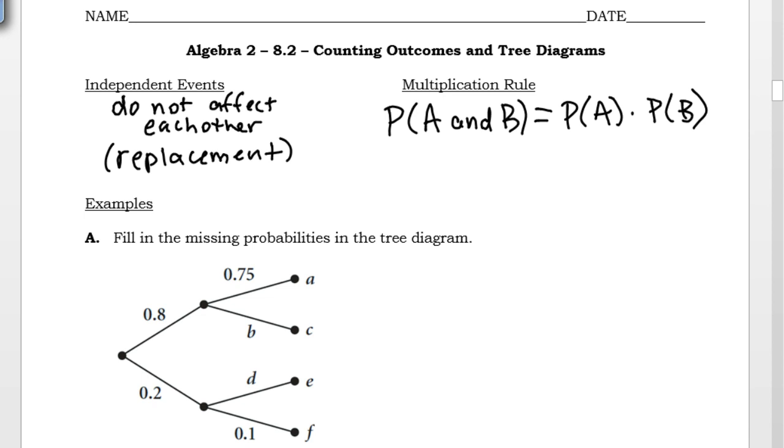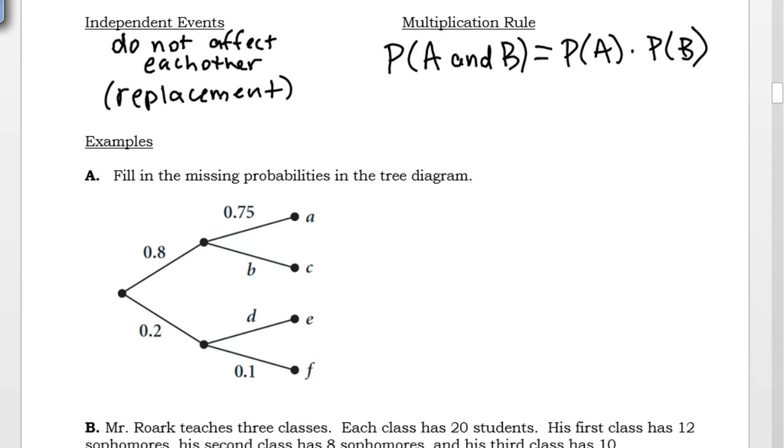We're going to use some tree diagrams to say, if this is going to happen and then this is going to happen, I can multiply those two together to get the probability that both things are going to happen.